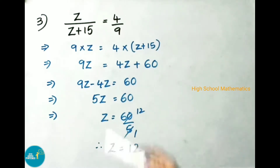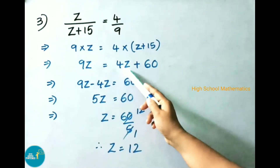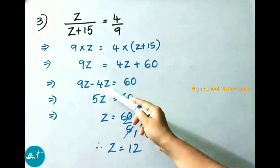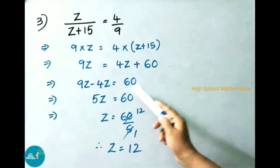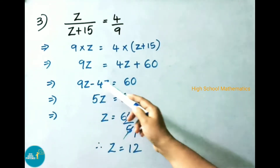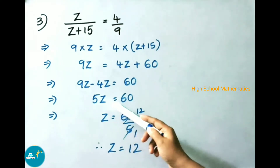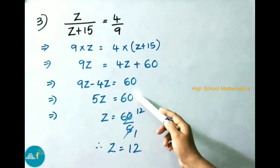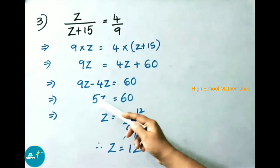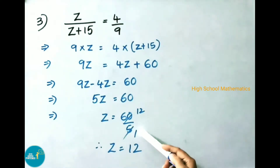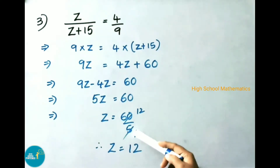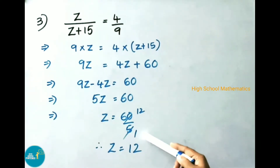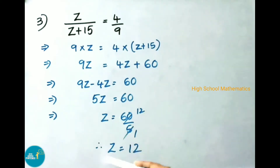That implies 9z, and on transposing 4z becomes minus 4z, so 9z - 4z = 60. That implies 5z = 60, so z = 60/5. Using the 5 times table: 5 × 12 = 60. Therefore z = 12.